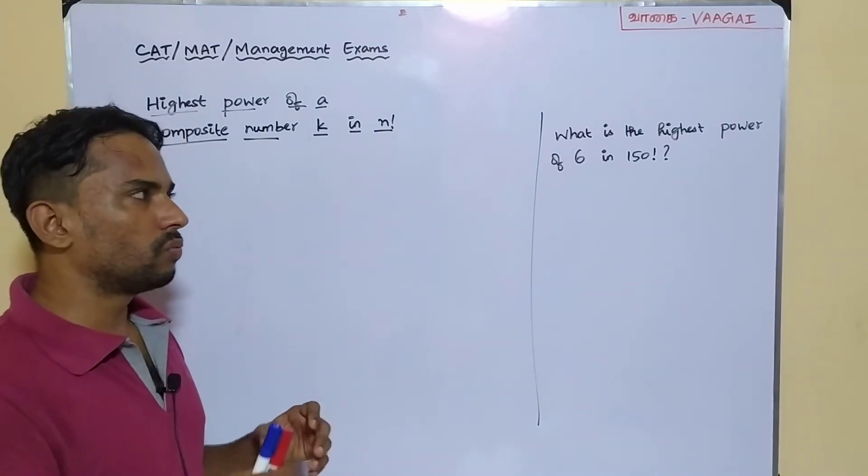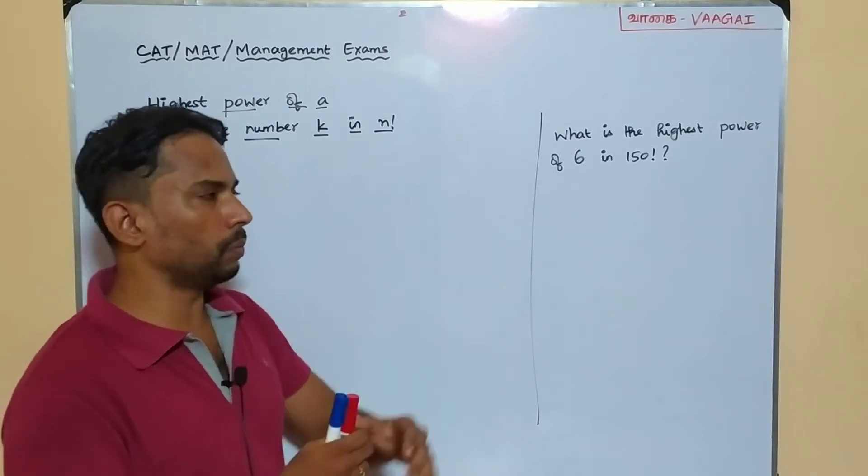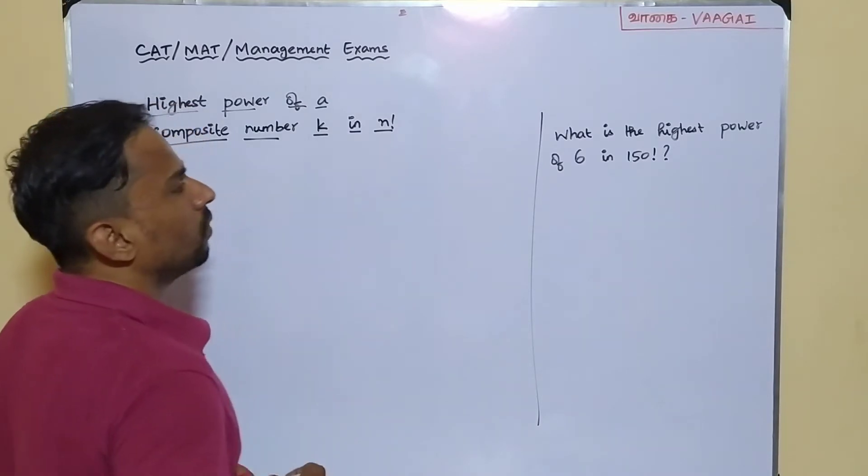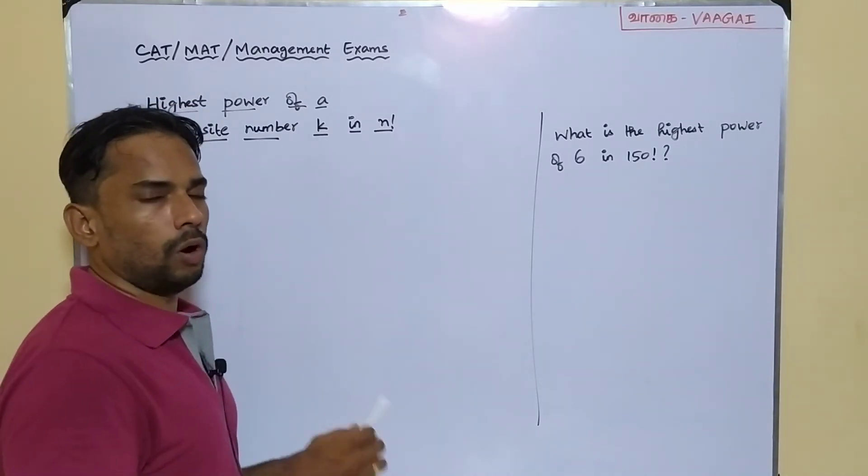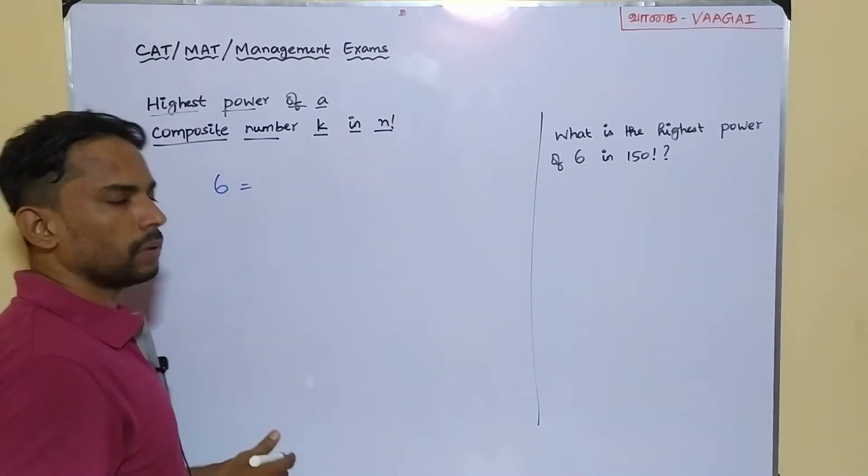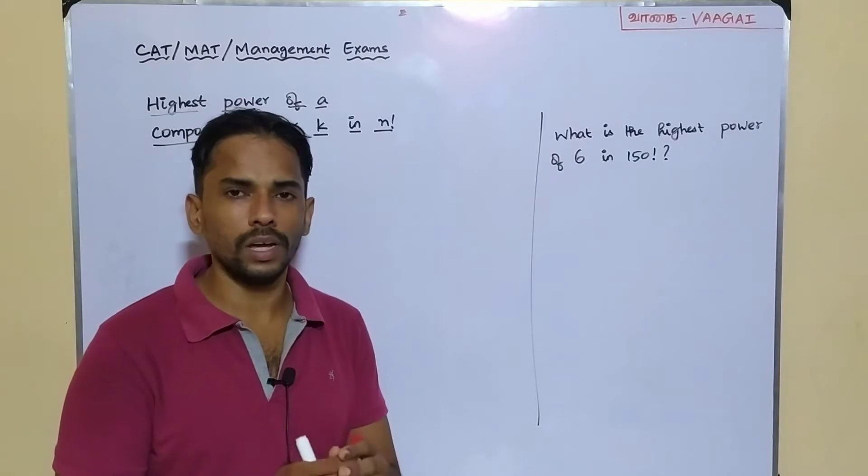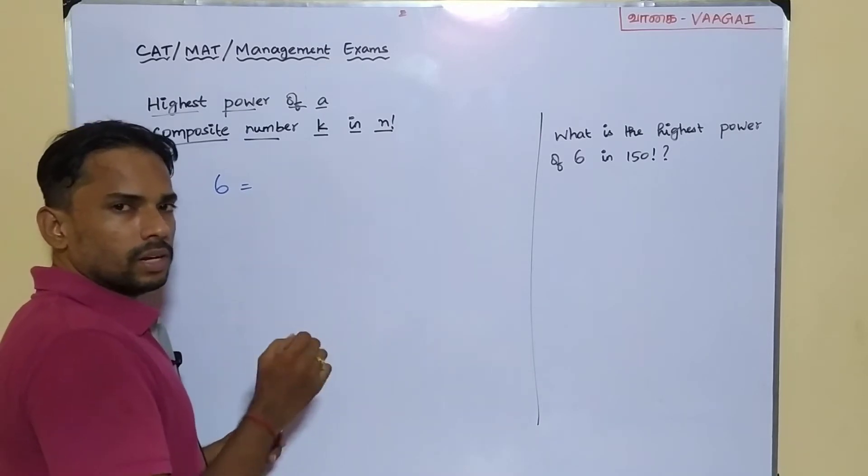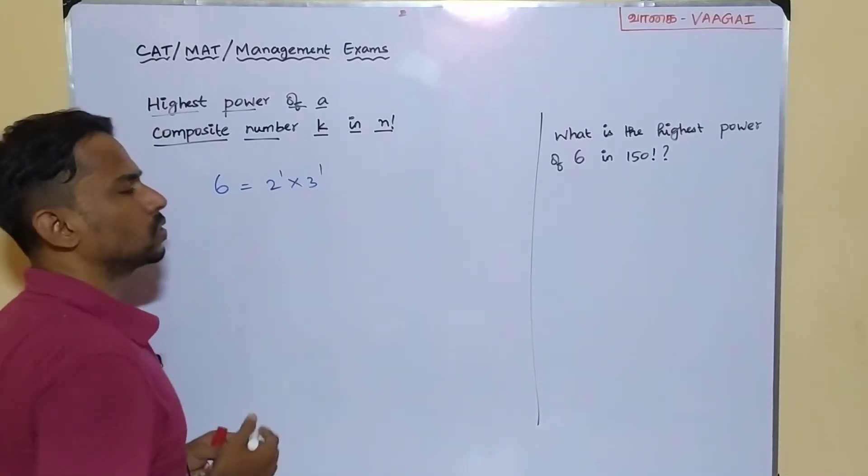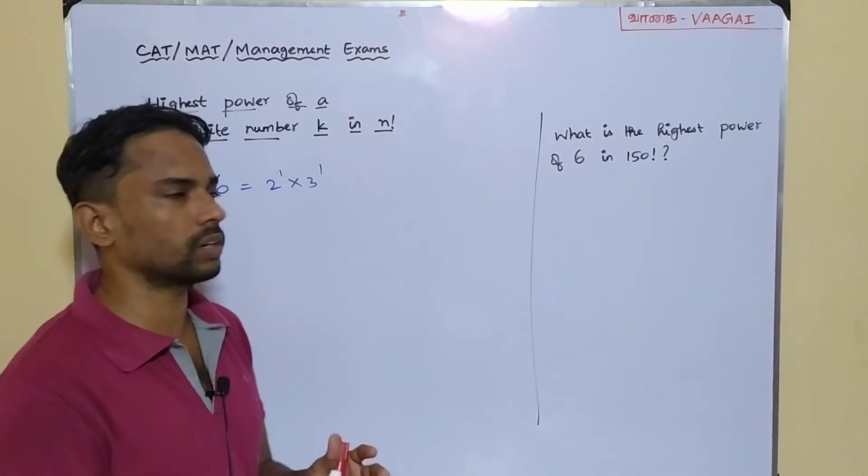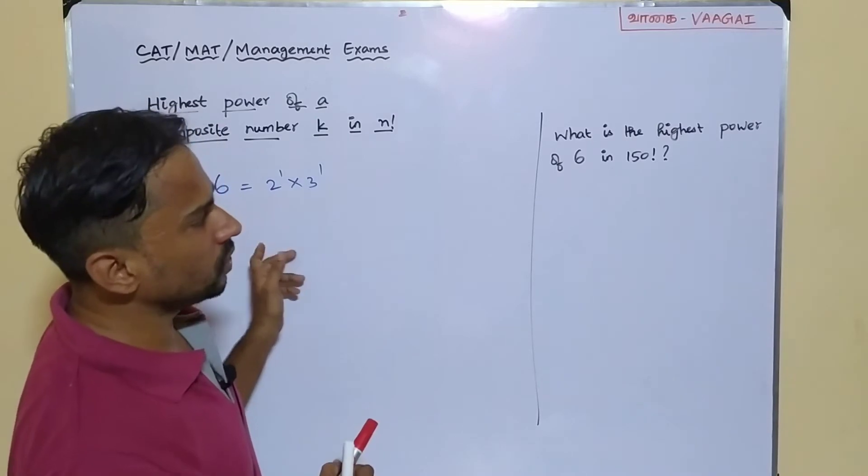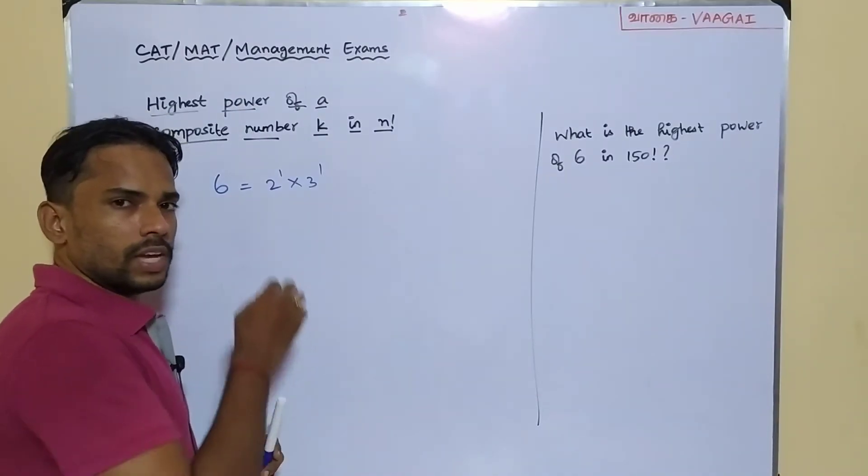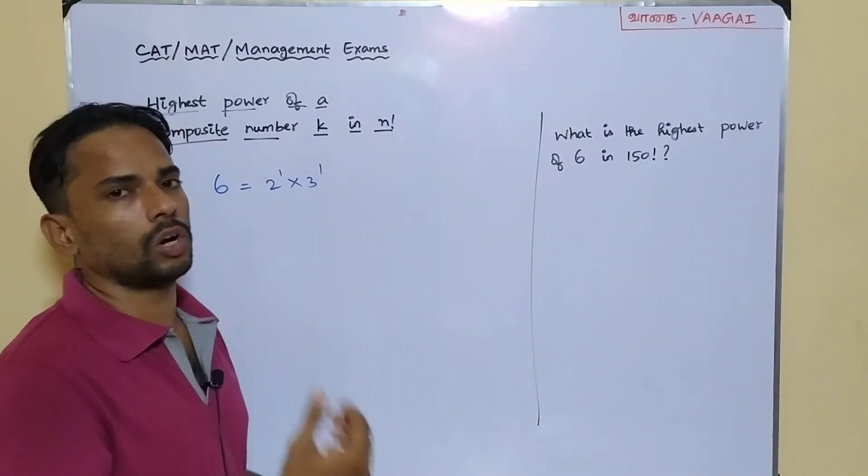We will try to learn the concept through this problem itself. Our number here, 6, is a composite number. Once we are given a composite number, we must decompose the number. We have to factorize our number here. So in that way, 6 can be factorized as 2 power 1 and 3 power 1. This is going to be the prime factorization of our number 6, and we need to find its highest power in this 150 factorial.